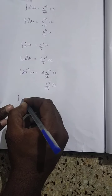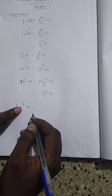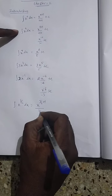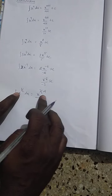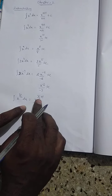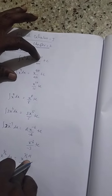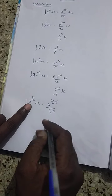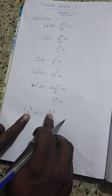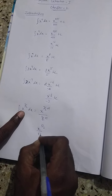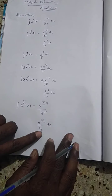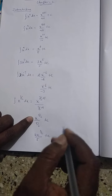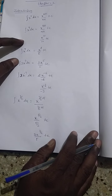Next, the integration of x power 3 by 2 dx. Here, the power is a fraction. Apply the same formula: x power 3 by 2 plus 1, by 3 by 2 plus 1. Here n is 3 by 2, so 3 by 2 plus 1 equals 5 by 2 by cross multiplication. So x power 5 by 2, divided by 5 by 2. Dividing by a fraction gives 2x power 5 by 2 divided by 5 plus c.